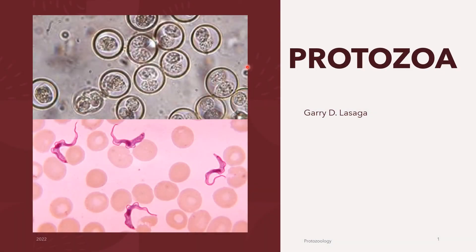Welcome to the Introduction to Veterinary Protozoology. Only two kingdoms of living creatures have members that are true parasites of domesticated animals: the kingdom Animalia and the kingdom Protista. Most parasites of domesticated animals belong to the animal kingdom, including flukes, tapeworms, roundworms, arthropods, and others. The remaining animal parasites belong to the kingdom Protista, which contains unicellular or one-celled organisms better known as protozoans.